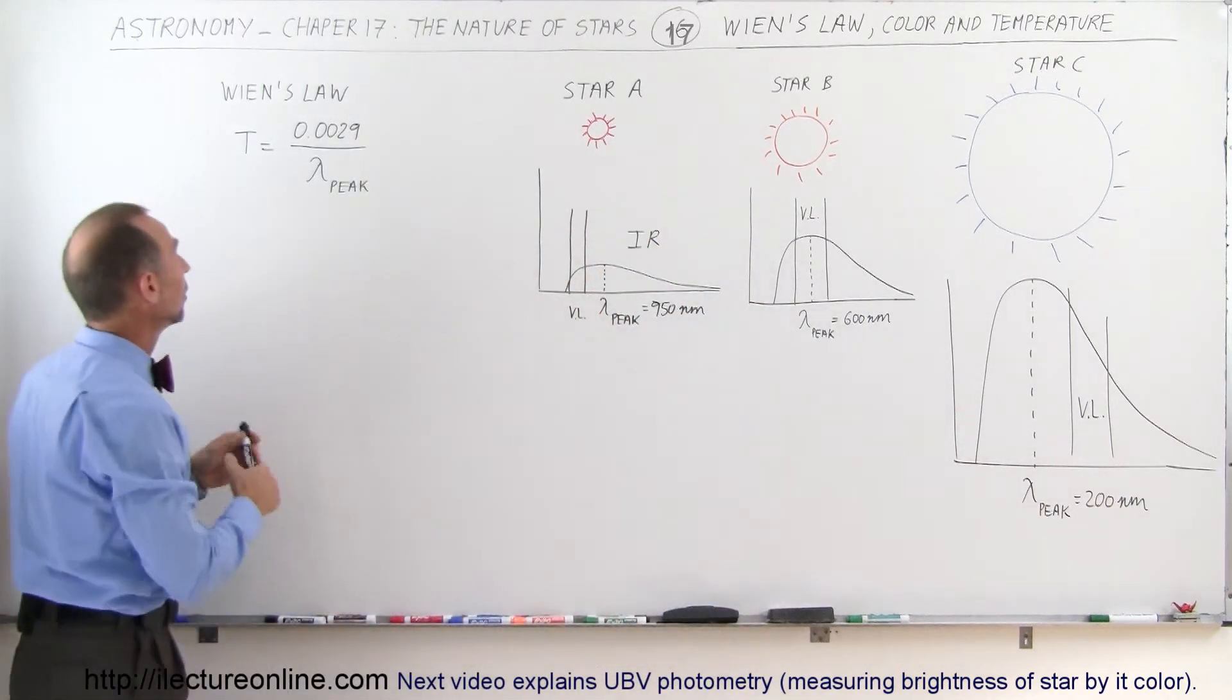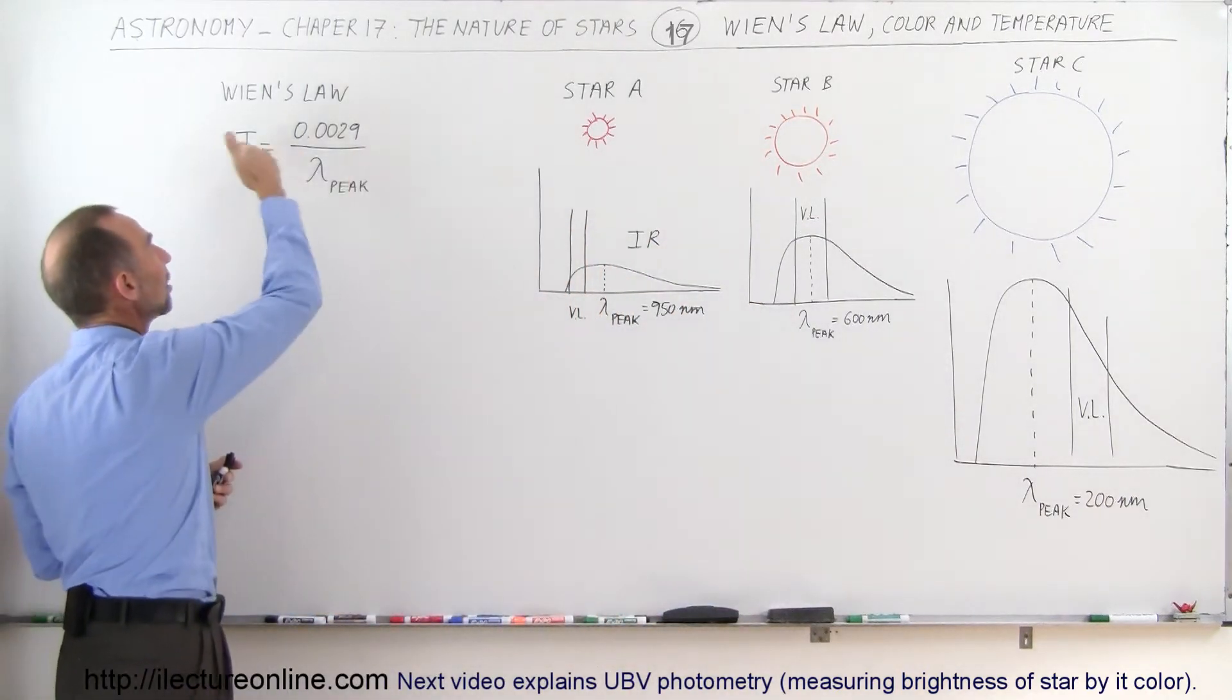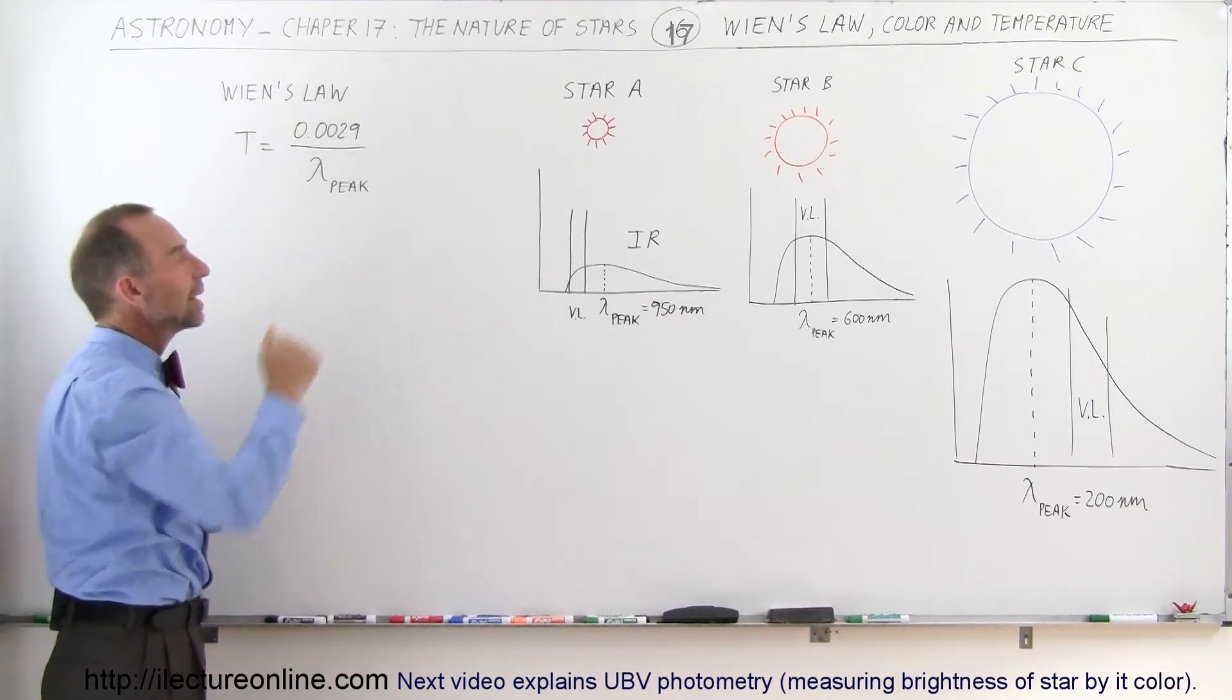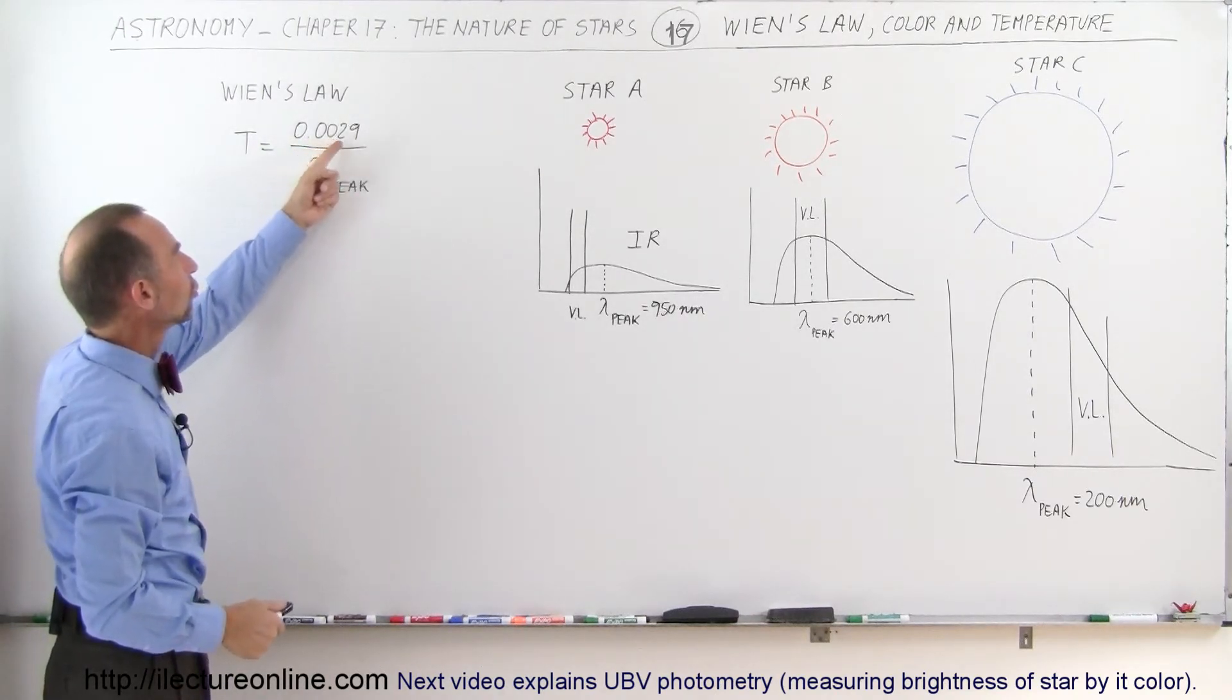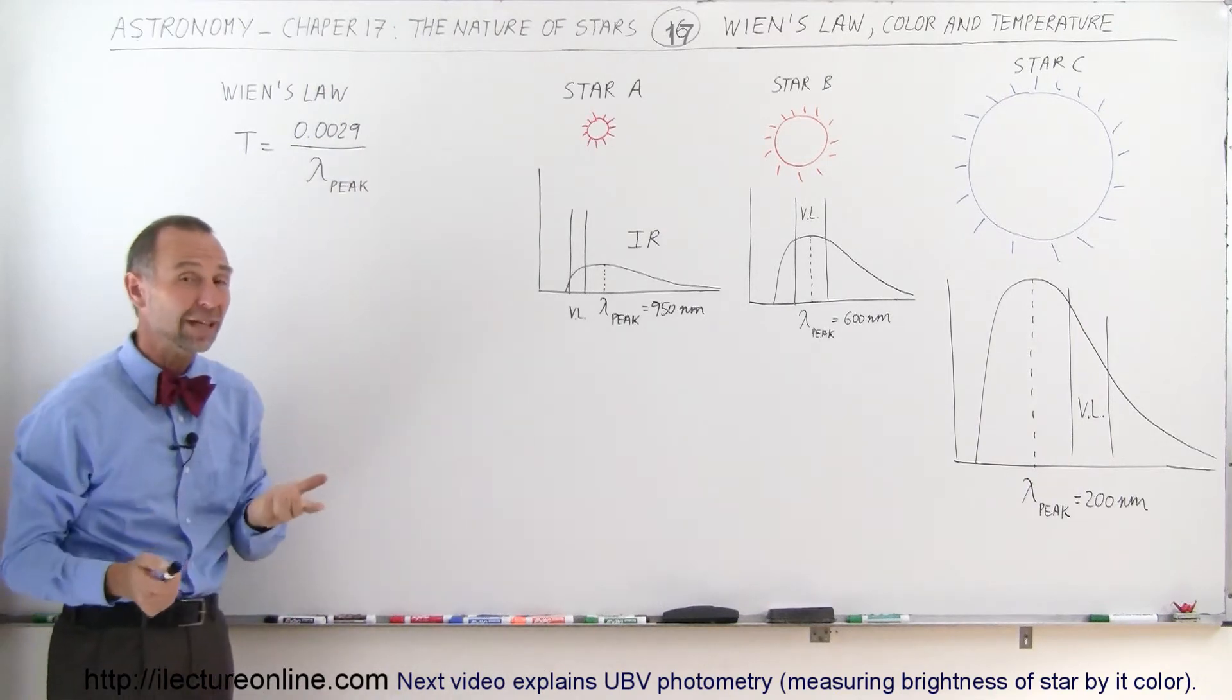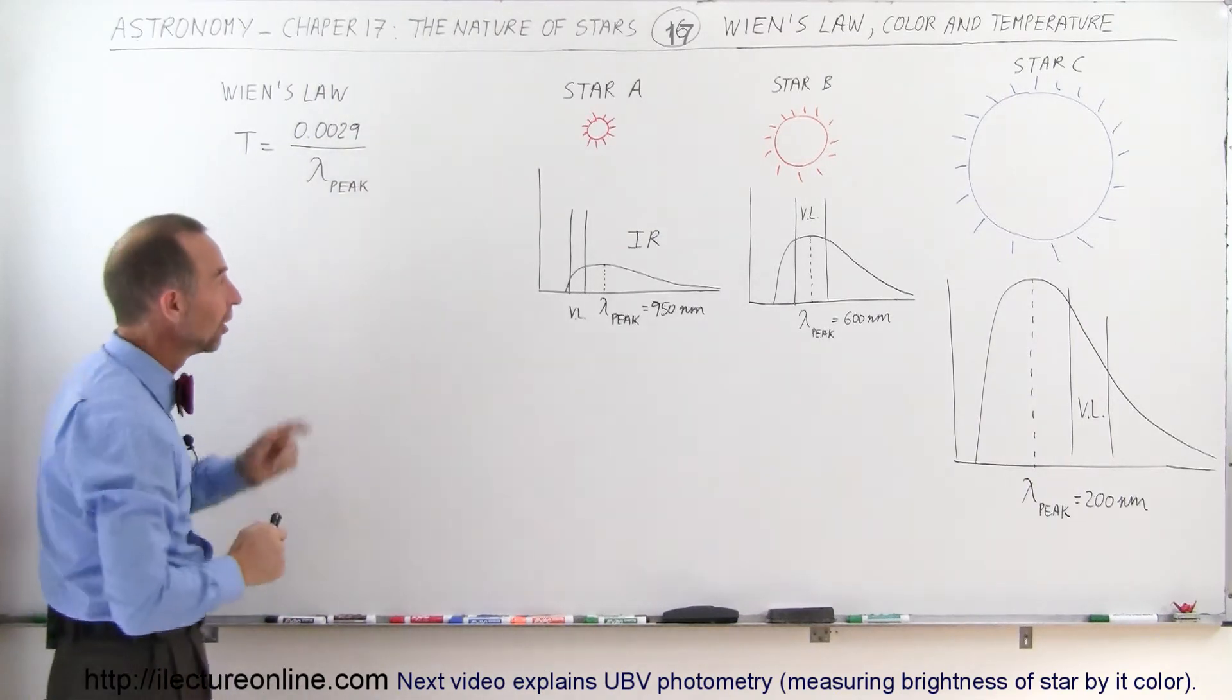Because of Wien's Law, we're able to relate temperature to the wavelength of peak radiation. All we have to do is take 0.0029 and divide it by that peak wavelength, and we get the surface temperature of those stars.